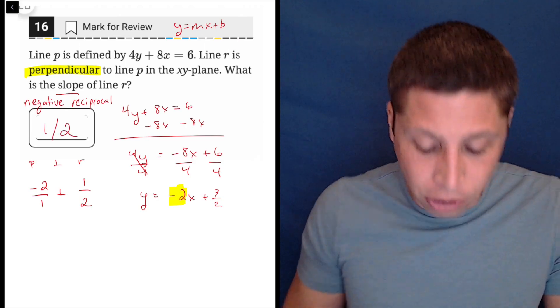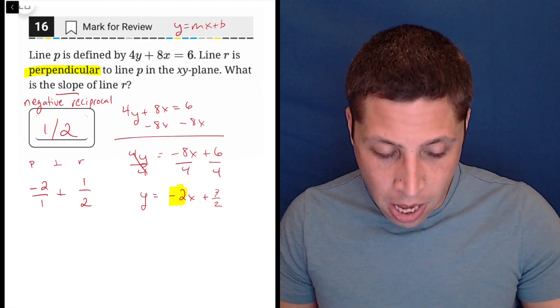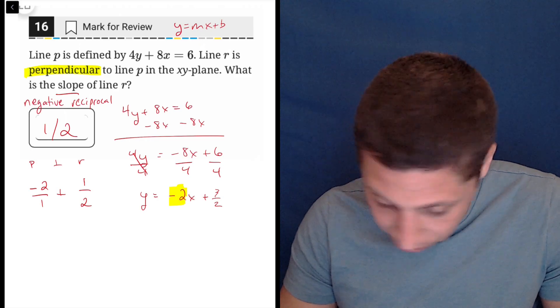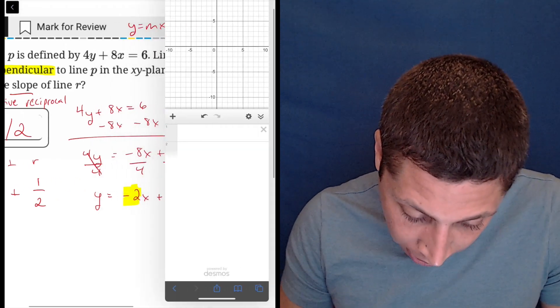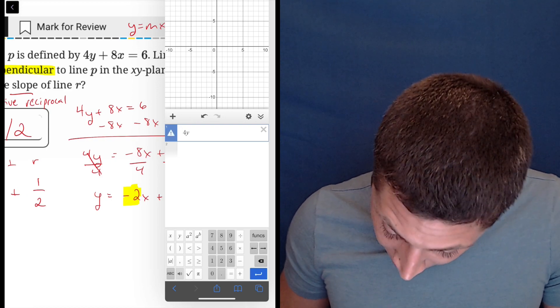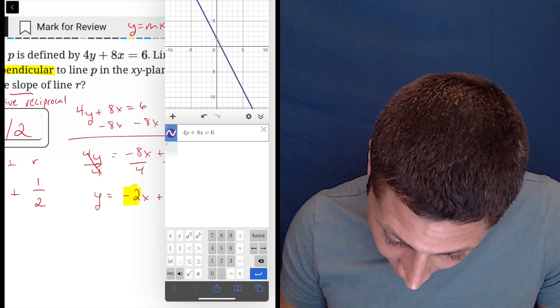You can bubble it as one-half like this. You can bubble it as 0.5. That's a case where either way doesn't matter. Now, if you were a little unsure, you could check it. We don't have a y-intercept for this particular line. It doesn't really matter. We could do it without one, but we could say 4y plus 8x equals 6. There's my line.